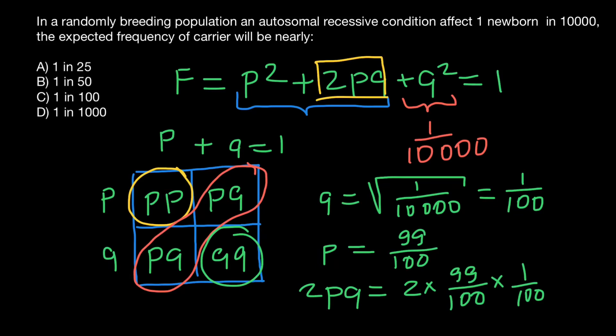...be 2 over 100, or it's going to be 1 over 50. And this is answer B.